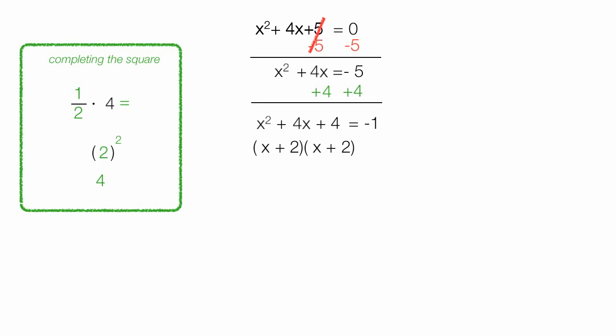I factor the left-hand side of the equation, which gives me x plus 2 times x plus 2. This all equals to negative 1. I rewrite this as x plus 2 squared is equal to negative 1.